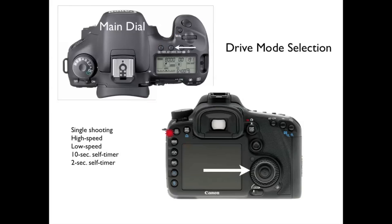For your drive mode, there's your drive button right there — push that button. Once you push the drive button, rotate the wheel and you can select whatever drive mode you want to shoot in: single, high speed, low speed, or a self-timer.